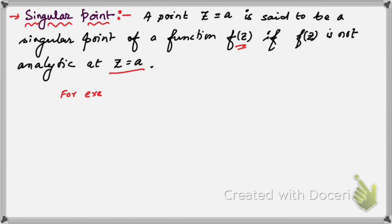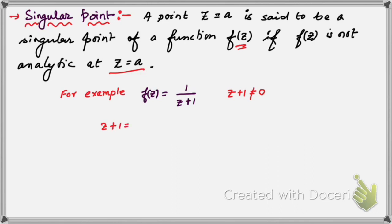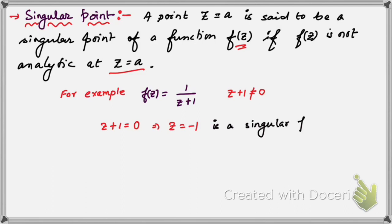For example, suppose f(z) = 1/(z+1). For this function to be analytic, the denominator should not be equal to zero, so z+1 should not equal zero. When z = -1, the denominator becomes zero and the function is not defined, so the function is not analytic there. Therefore, z = -1 is the singular point of this function f(z).